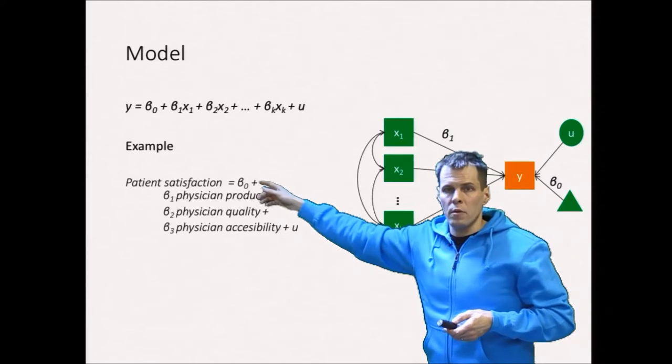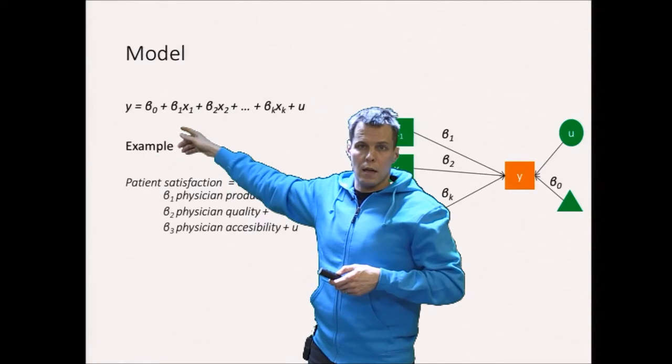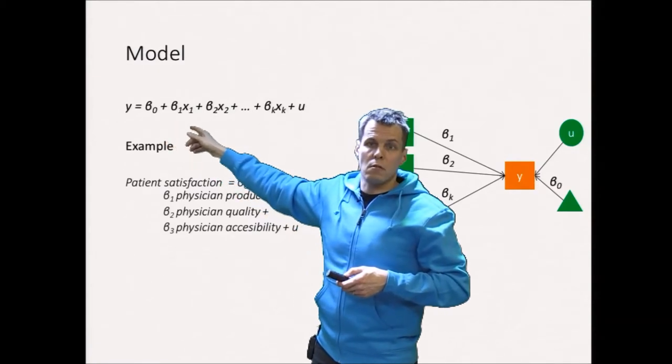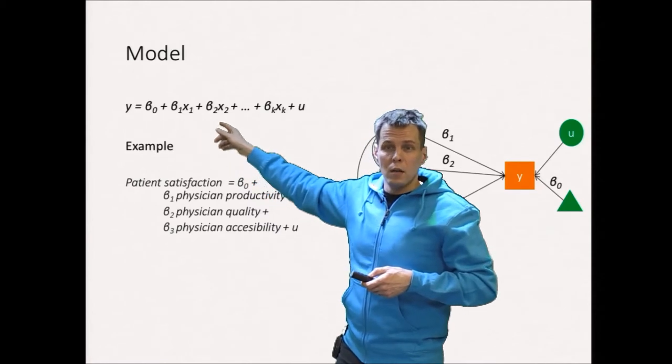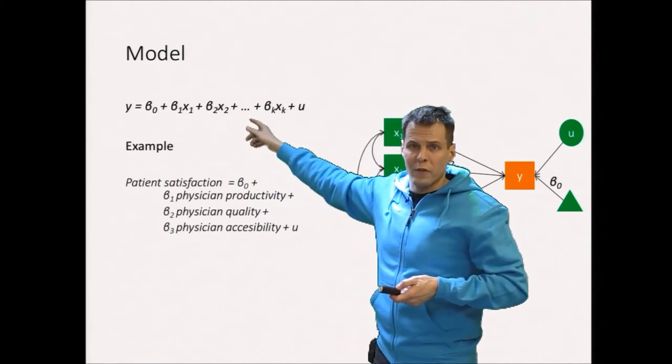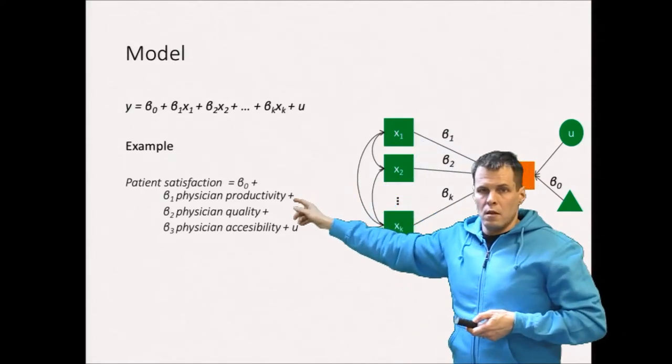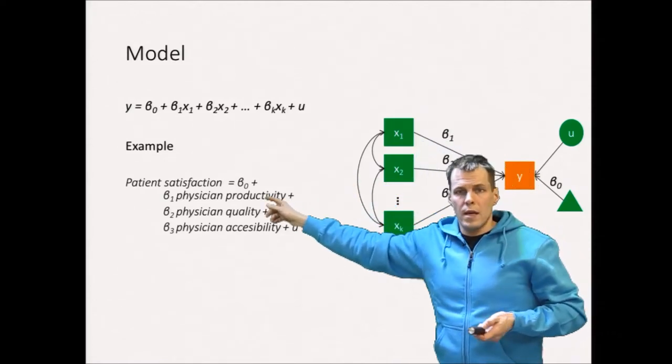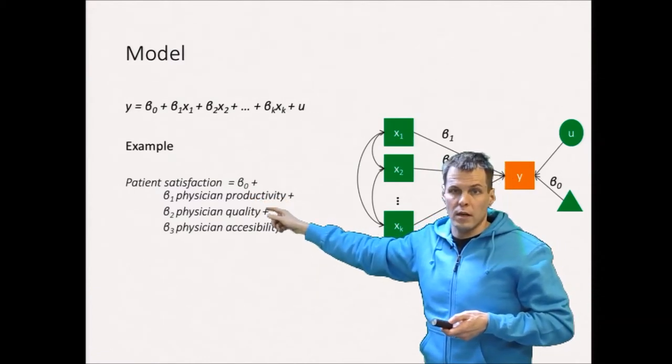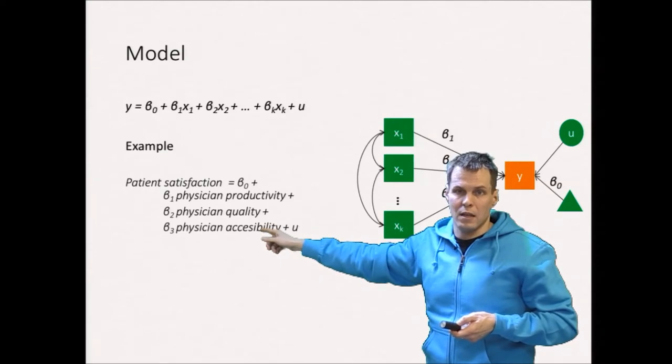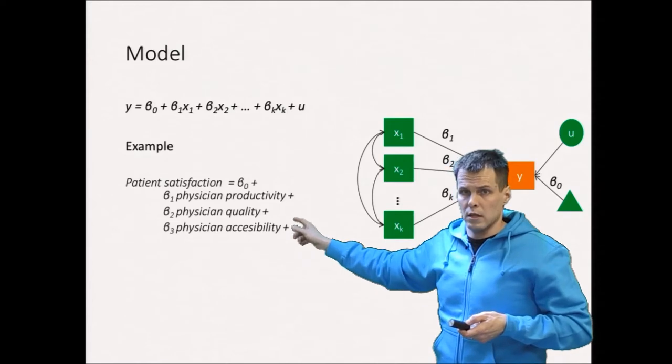In equation form we can see that y here is a weighted sum of the x's and the weights are the regression coefficients. Each of these regression coefficients quantifies what is the influence of one of the independent variables on the dependent variable. For example we can model patient satisfaction as a weighted sum of physician productivity, physician quality, physician accessibility and some variation that the model doesn't explain.